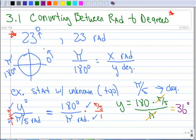This pi cancels with this pi, and 180 divided by 5 is 36 degrees. So somewhere over here in quadrant 1, if this was the unit circle, the arc length would be pi over 5. The angle measure would be 36 degrees. Those things are equivalent.